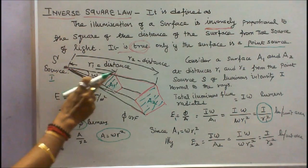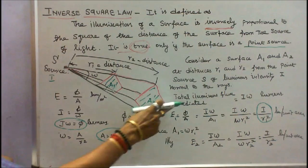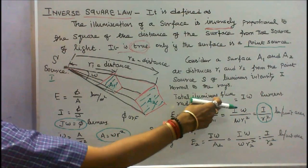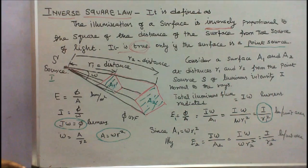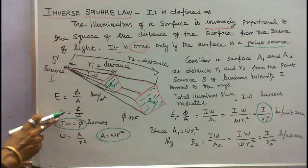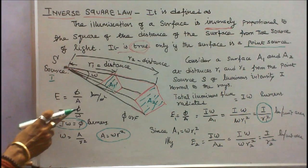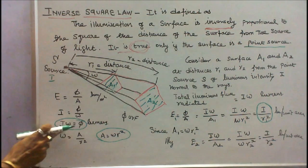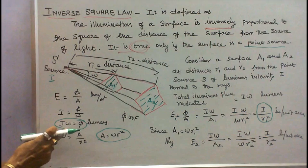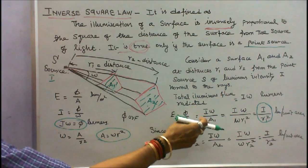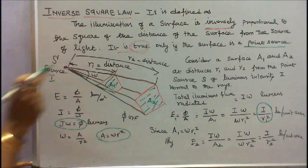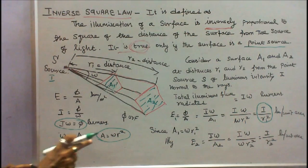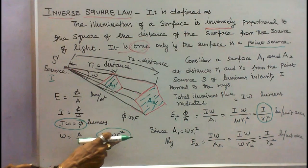Normal to the rays. Therefore total luminous flux gradient is equal to I into omega lumens. Because I is equal to luminous intensity, I is equal to phi by omega. I can write phi is equal to I into omega. I simply substitute I into omega divided by A1. And A1 is equal to omega into R1 square.